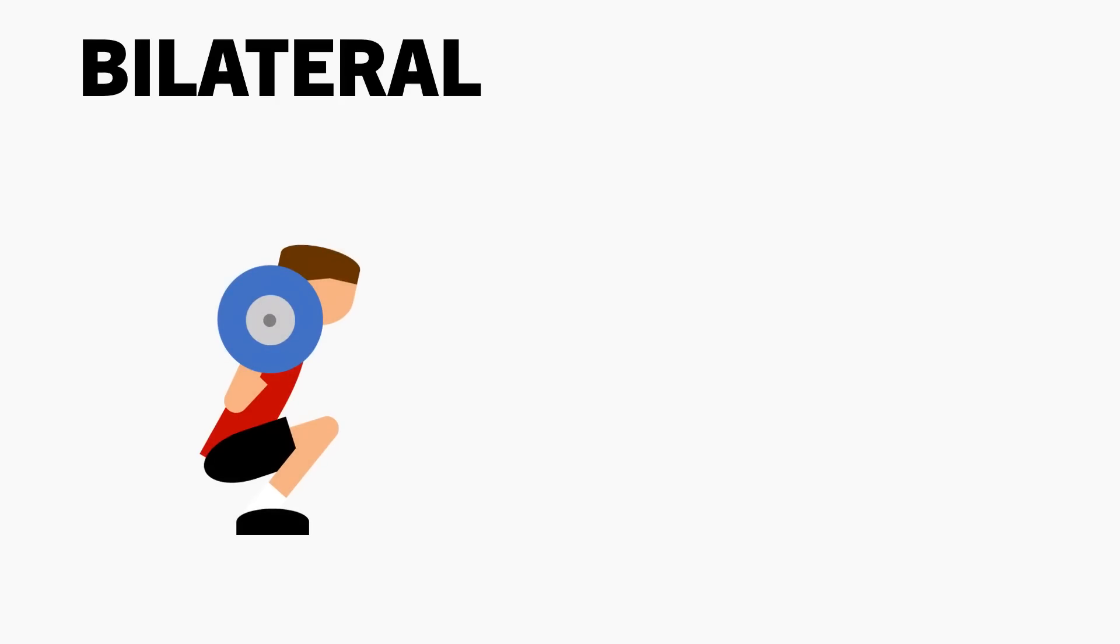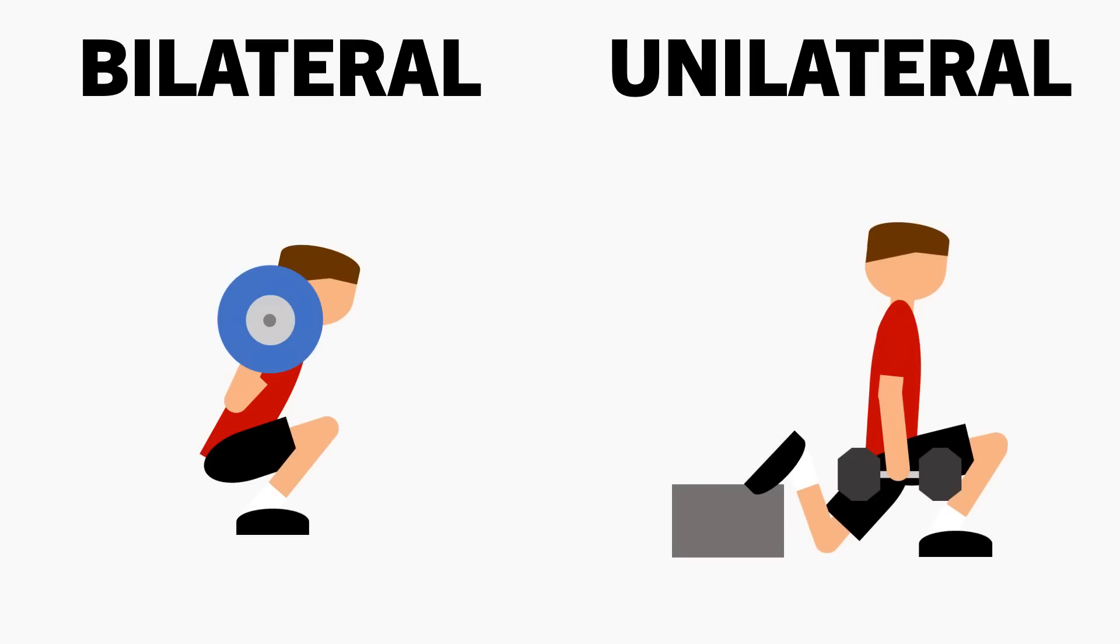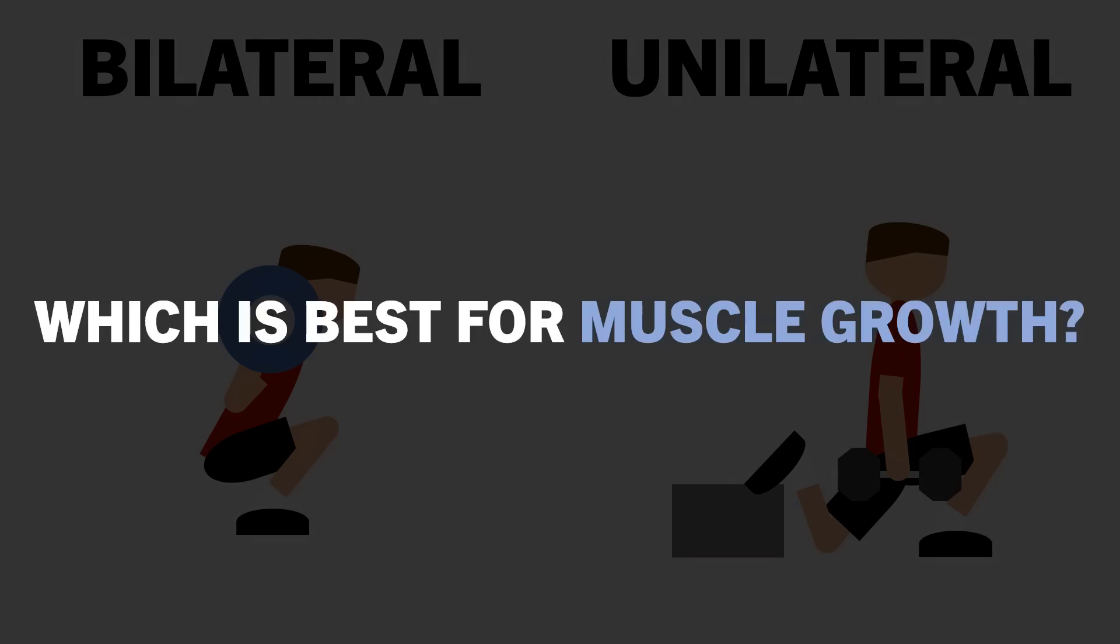Bilateral exercises are those which use both the left and right limbs simultaneously. Unilateral exercises are those which only use one limb at a time. However, which of these is better for muscle growth? In this video we will try to answer this question.